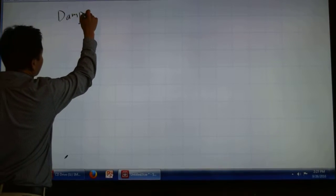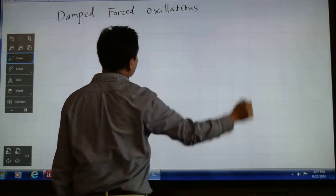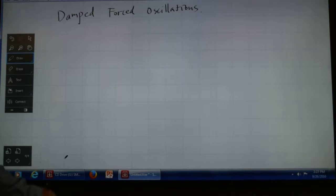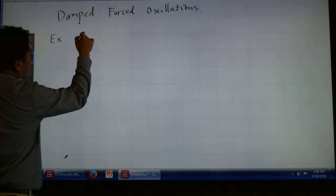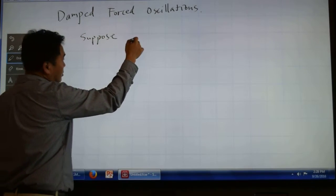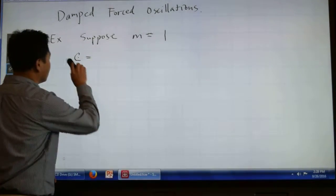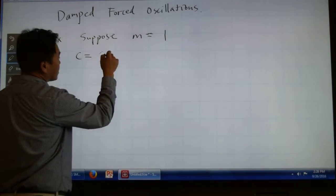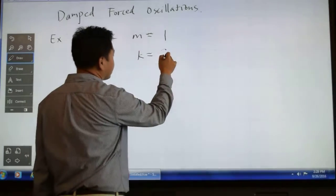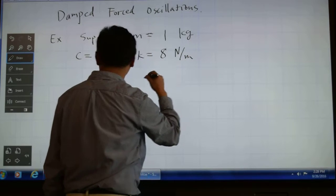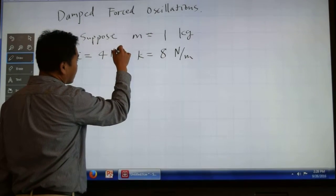Damped forced oscillations. Let's think about the following case. Suppose you have mass m = 1 kg, c = 4 newton seconds over meters, and k = 8 newtons per meter.